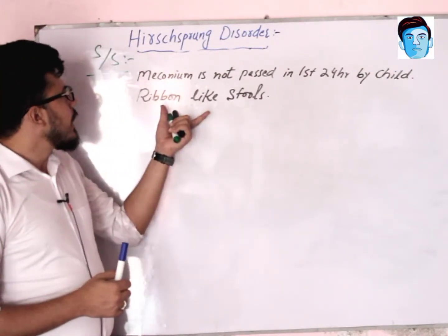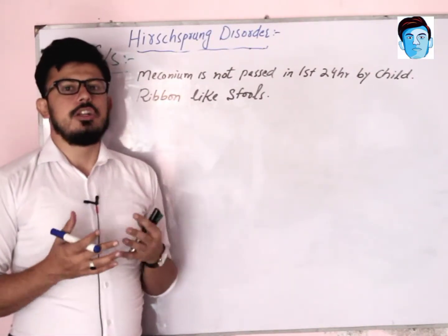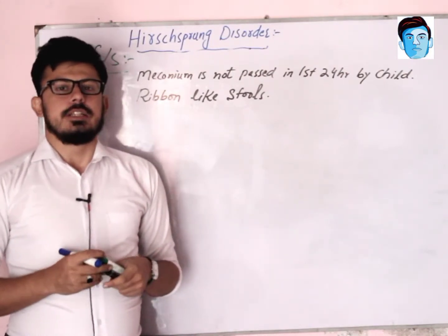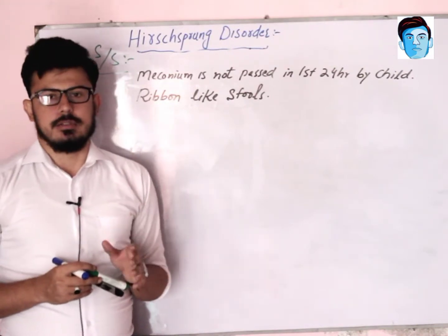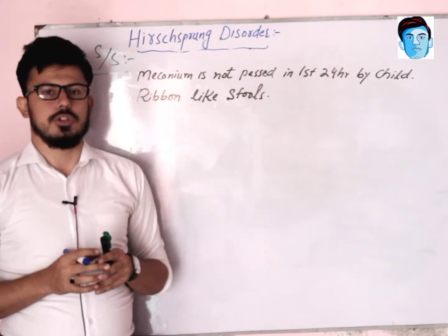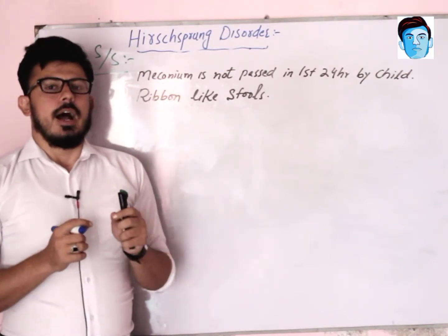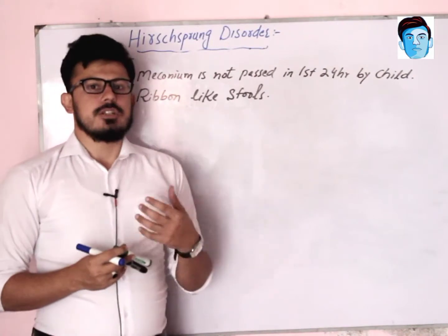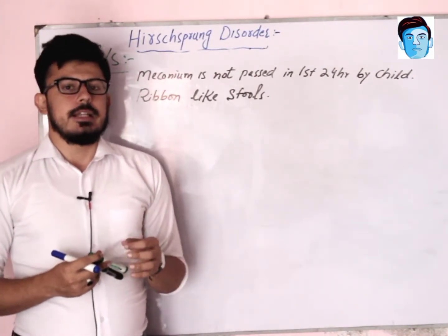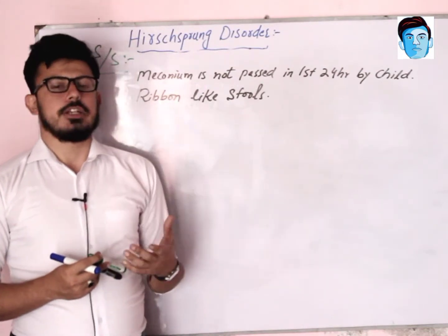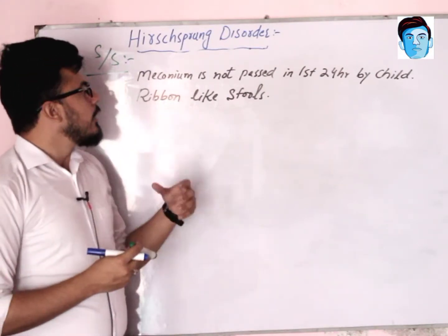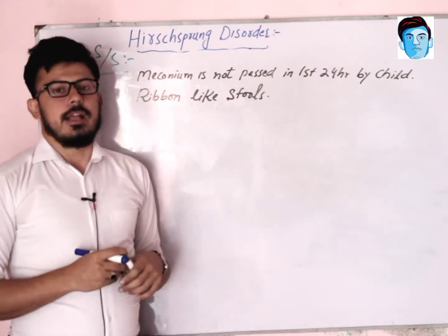The reason for ribbon-like stools is that the proximal portion — just proximal to the aganglionic portion — has accumulation of fecal matter. That accumulation exerts pressure on the aganglionic portion, leading to stools being passed in a narrow, ribbon-like fashion because there is not enough space for normal passage.